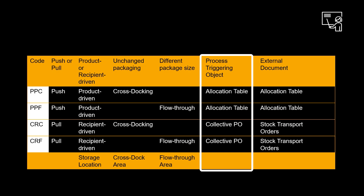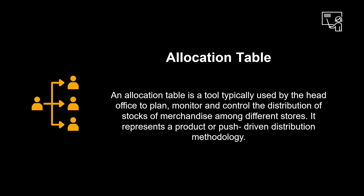Pull and push-driven processes are fueled by a different set of documents. In a push scenario, we use allocation tables; in a pull scenario, we utilize collective purchase orders. An allocation table is a tool typically used by the head office to plan, monitor, and control the distribution of stocks of merchandise among different stores. It represents a product or push-driven distribution methodology.